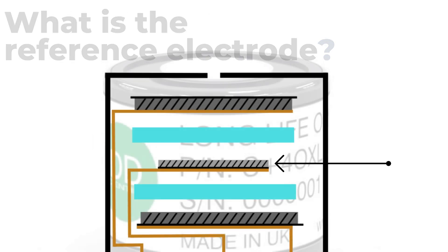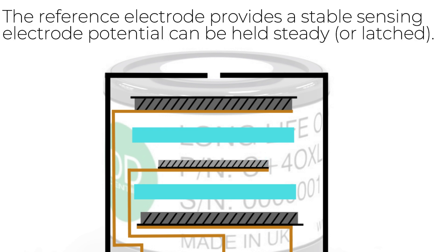The third electrode inside the sensor, the reference electrode, does not take part in any chemical reactions and is included only to provide a stable potential or voltage against which the sensing electrode potential can be held steady or latched.